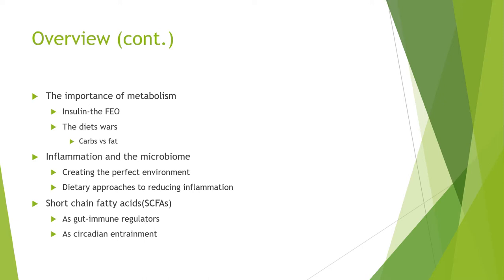We'll discuss how you can use that information to lower inflammation in the colon and begin to get your microbiome working for you, especially in cases of inflammatory bowel disease. We're really going to dig into short-chain fatty acids such as butyrate and propionate. These are gut immune regulators, and they are critically important to synchronizing the microbial clock to all the clocks throughout the body.